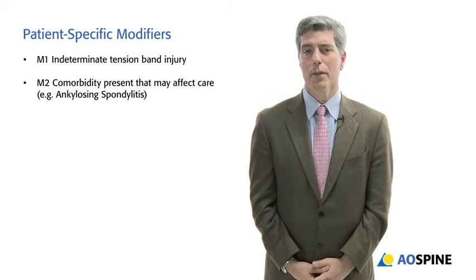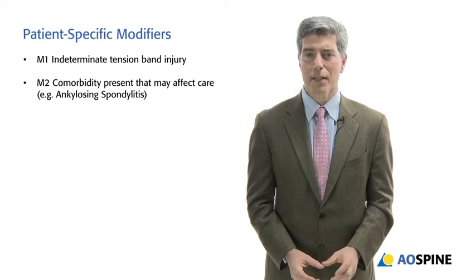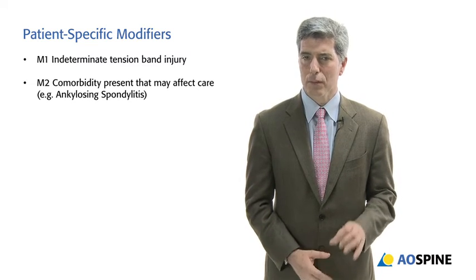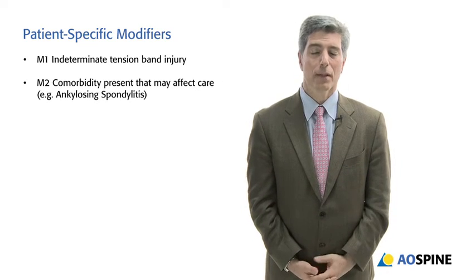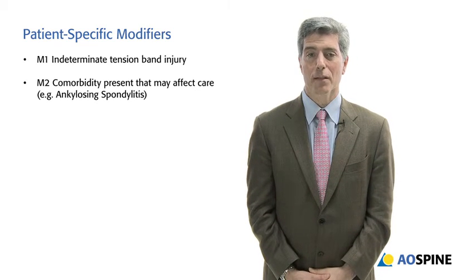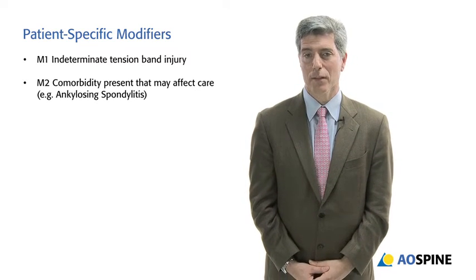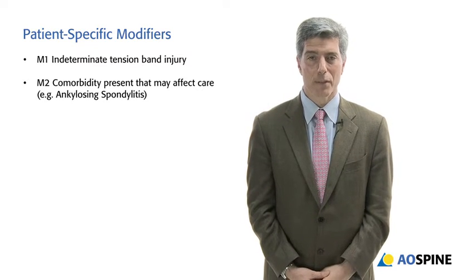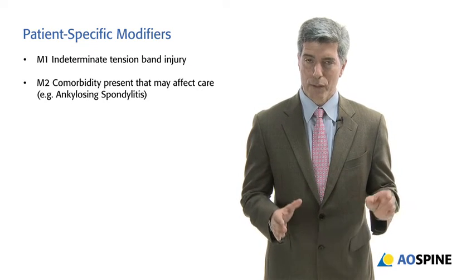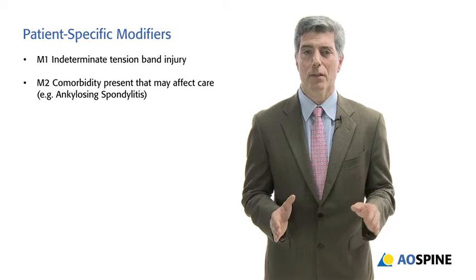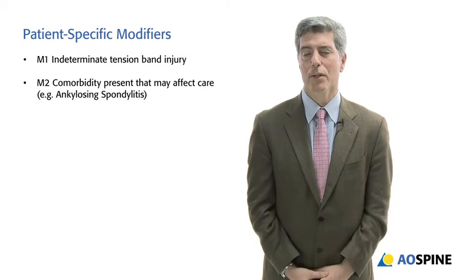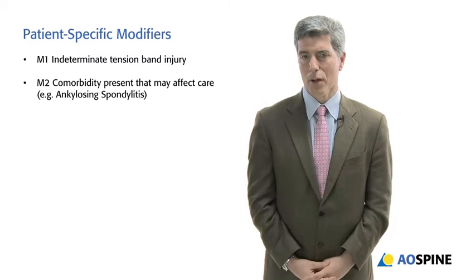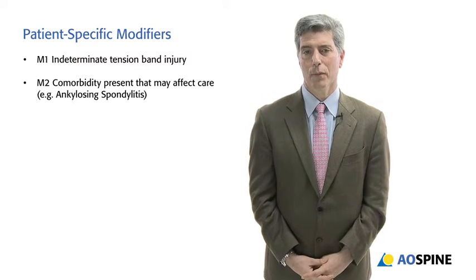There are certain comorbidities a patient may have which make them potentially very unstable with any type of fracture, no matter how benign the fracture is. We see that with ankylosing spondylitis or stiffening spine disease. In that situation, another modifier would be appended — M2. When you hear M2 ankylosing spondylitis, you have to be very careful with that patient, because any slightest movement may cause a neurologic problem.